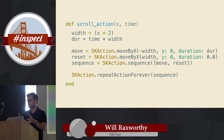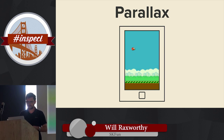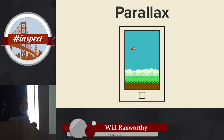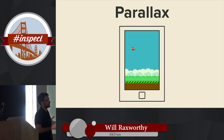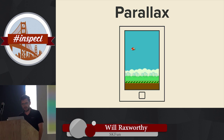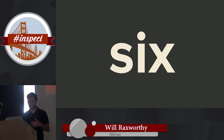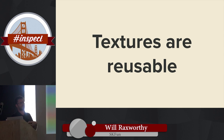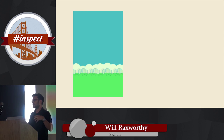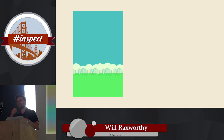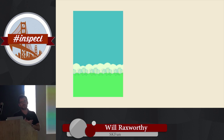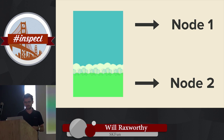Number six: textures are reusable between sprite nodes. When you load a texture, you can reuse that same texture in memory for multiple sprite nodes that need the same image. This cuts down on memory usage and is a very efficient way to create reusable nodes — the same texture image gets used for node one and node two.